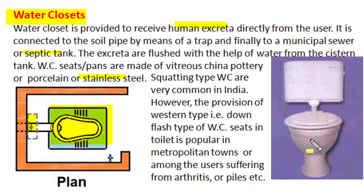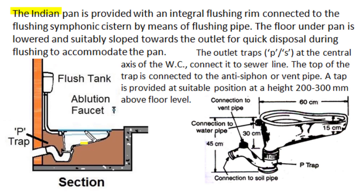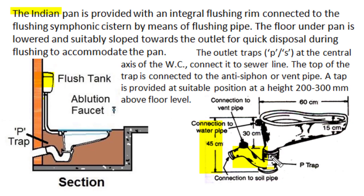Squatting-type water closets are very common in India; however, the western-type down-flush WC is also becoming popular in big cities and is also necessary for users suffering from arthritis or piles. The Indian pan has an integral flushing rim connected to the flushing siphonic system through a flush pipeline. The floor under the pan is lowered, and the pan is placed with a slope towards the final outlet for quick disposal of waste during flushing. A P-type or S-type trap at the central axis of the WC connects it to the sewer line. The top of the trap is connected to a vent pipe for anti-siphon action, with a tap provided 200–300 mm above floor level.